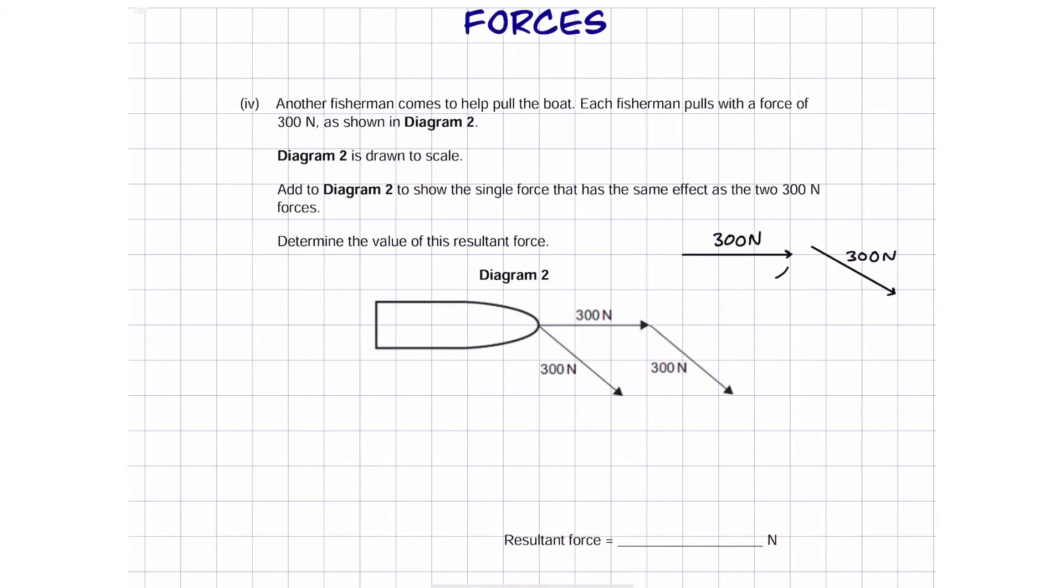So there we go, we can put fishermen one and two next to each other like this. And if we start from here and end here, draw a line between them, and this is your overall force.